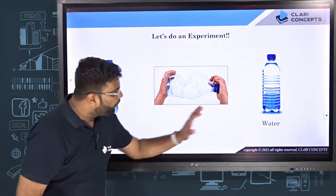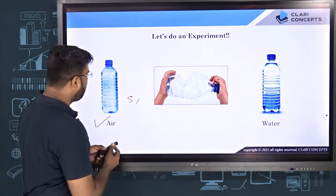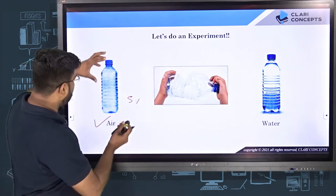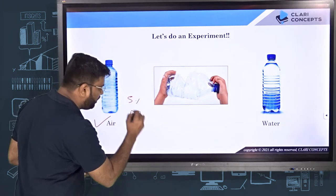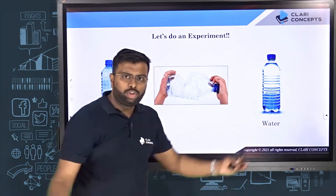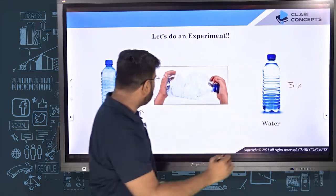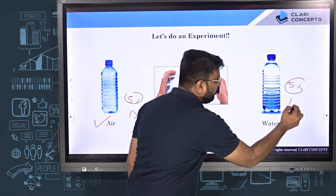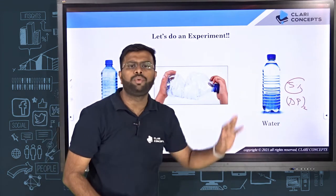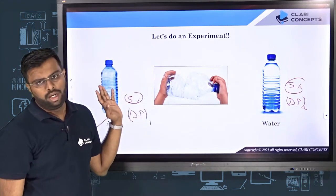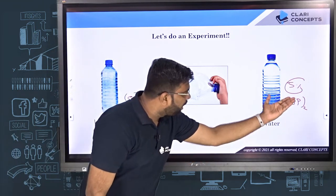Now the question is, how much? For example, if I want to reduce the volume of air by 5%, I will put extra pressure — let's call it delta P1. On the other hand, if a superman is trying to reduce the volume of water by the same 5%, the pressure required there is delta P2. Delta P2 will always be much, much higher than delta P1. So there must be a property of the fluid relating this delta P and the volume change.